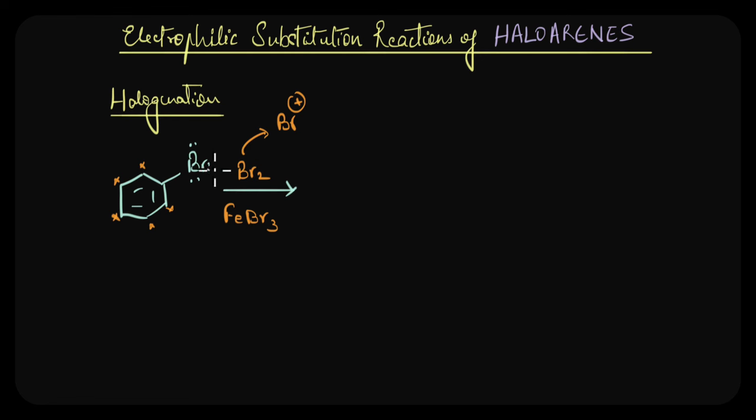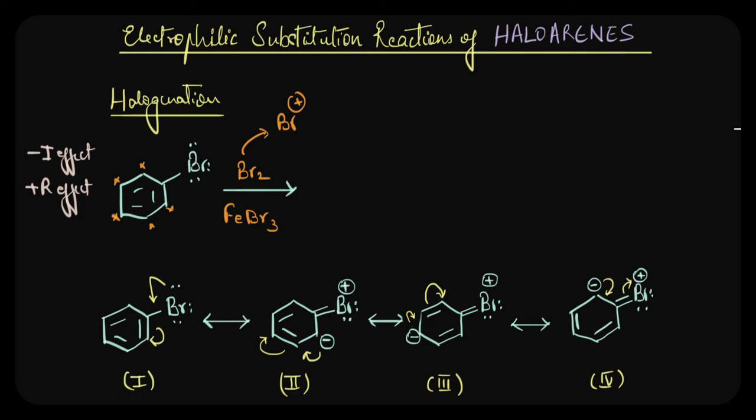Well, turns out that even though bromine is electron withdrawing via inductive effect, it actually releases electrons towards the benzene ring due to resonance effect. So, because of resonance, the lone pair of electrons on the halogen atom can delocalize with the pi electrons of the benzene ring and result in the following resonance structures.